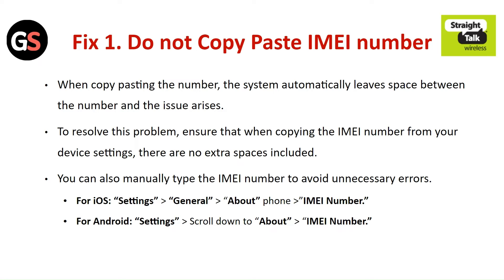For iOS, go to Settings, then General, then click on About Phone and find the IMEI number. For Android, go to Settings and scroll down to About and then find the IMEI number.